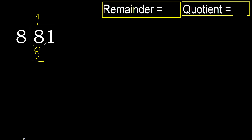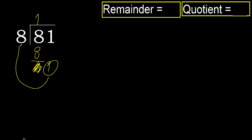Ok. 8 minus 8 is 0. Next, eliminate 0 on this side. 1 is less, therefore next — that is not a number.